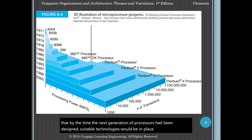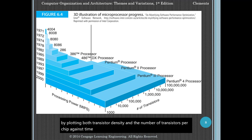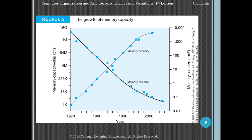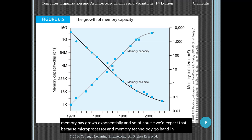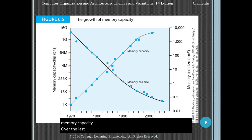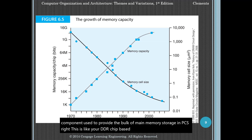Figure 6-4 provides a 3D illustration of the growth of semiconductor technology by plotting both transistor density and the number of transistors per chip against time, giving a visual sense of where we are. The density of semiconductor memory has also grown exponentially. Figure 6-5 demonstrates the growth of DRAM memory capacity over the last 50 years. DRAM is the mainstream memory component used to provide the bulk of main memory storage in PCs — this is like your DDR chip-based memory that you would put into your PC or laptop, and it is able to store one bit of data per transistor.